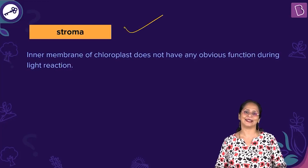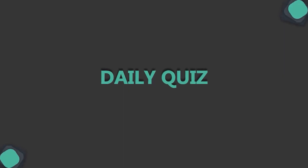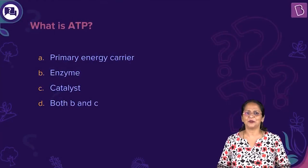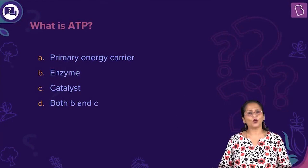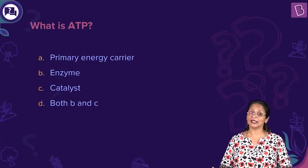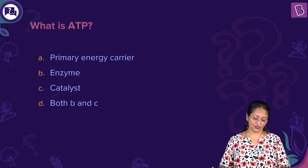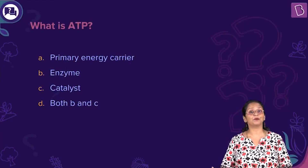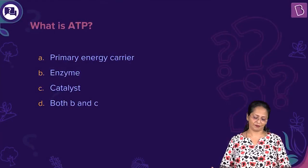So the correct answer: light-independent reaction takes place in the stroma. A very easy question for you: what is ATP? Is it a primary energy carrier, an enzyme, a catalyst, or both B and C?